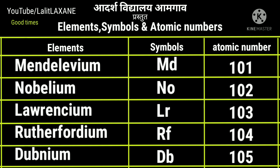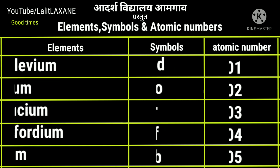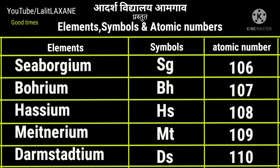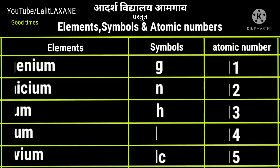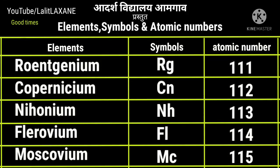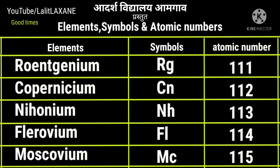Rutherfordium Rf, atomic number 104. Dubnium Db with atomic number 105. With atomic number 106, seaborgium Sg. Bohrium Bh with atomic number 107. Hassium Hs with atomic number 108. Meitnerium Mt, 109 and darmstadtium Ds with atomic number 110. Then roentgenium with atomic number 111, that is Rg. Copernicium Cn, 112.